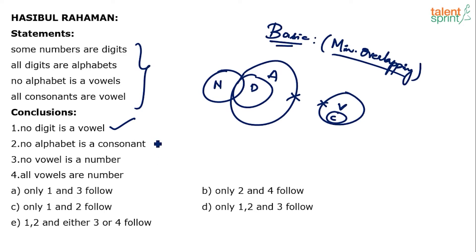So no alphabet is a consonant is also true. Moving to conclusion 3: no vowel is a number. Looking at the basic diagram, it appears to be true — vowels and numbers do not touch at all. But remember the classical rule in syllogisms: if a conclusion satisfies the basic diagram, it does not necessarily mean it is true. It has to satisfy all possible diagrams as well.